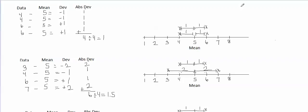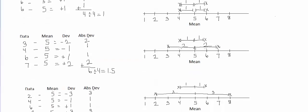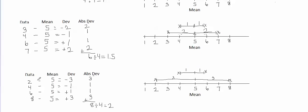I'll continue the video where we left off last time. First I wanted to give you an idea of why the mean absolute deviation shows the amount of spread in the data. Let's imagine here that I've asked four people how many children they have and got these four answers. Then I asked four other people the same question and got these four answers. Then I asked four other people and got these four answers.